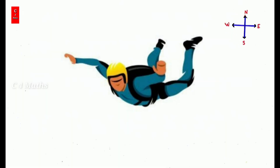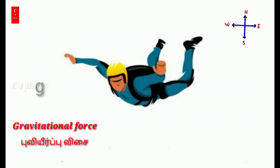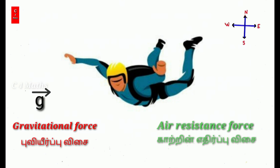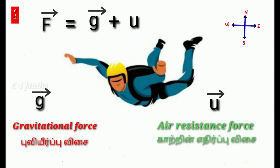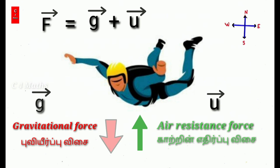Consider one skydiver. Two forces act on them: the first is gravitational force, represented as vector G, and the second is air resistance force, represented as vector U. The net force is G vector plus U vector. The gravitational force acts downward and the air resistance force acts upward.